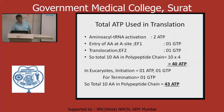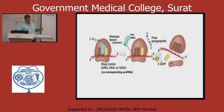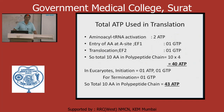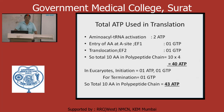In prokaryotes, initiation factors IF1, IF2, and IF3 are there. In eukaryotes, EIF1, EIF2, and EIF4 are there. In elongation, elongation factor 1 and elongation factor 2 are present, differing between prokaryotes and eukaryotes. In the releasing factor: RF1, RF2, and RF3 are there, different in prokaryotes and eukaryotes, but the basic names are the same.